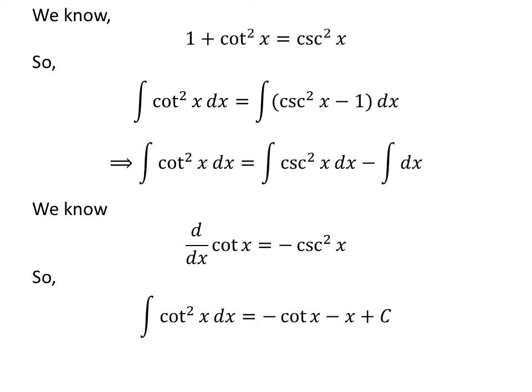Thus, integral of square of cotangent of x is equal to minus cotangent of x minus x. Then, add capital C which is the arbitrary constant of indefinite integral. Never forget to add this constant at the end of any indefinite integral.